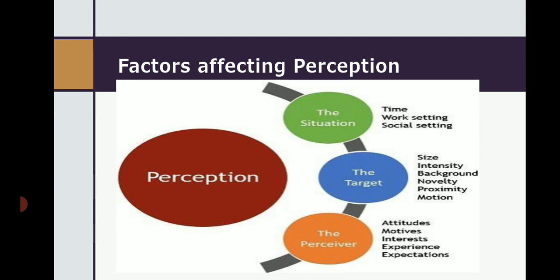Regarding target factors: size — if a display is very small, our attention toward it is minimal; but if it is large, highly visual, with high intensity, proper background, proximity, and motion, these elements create more attention. Size, intensity, background, light, and highlighting are all factors that help create attention and influence our perception. For example, in a shopping mall, offers are displayed very prominently so customers are influenced and notice the offer running.